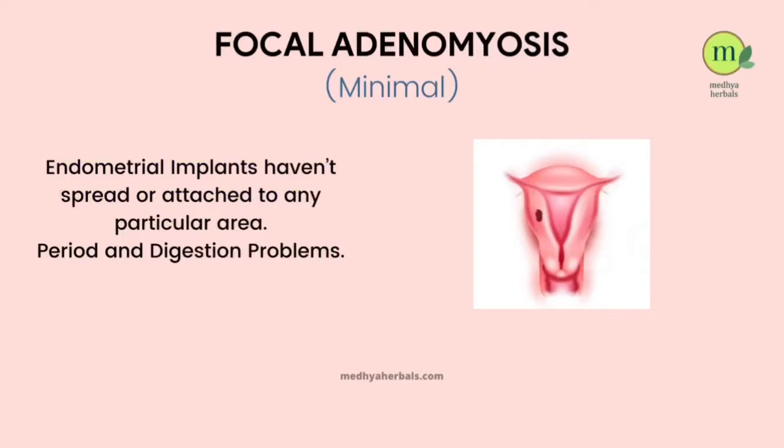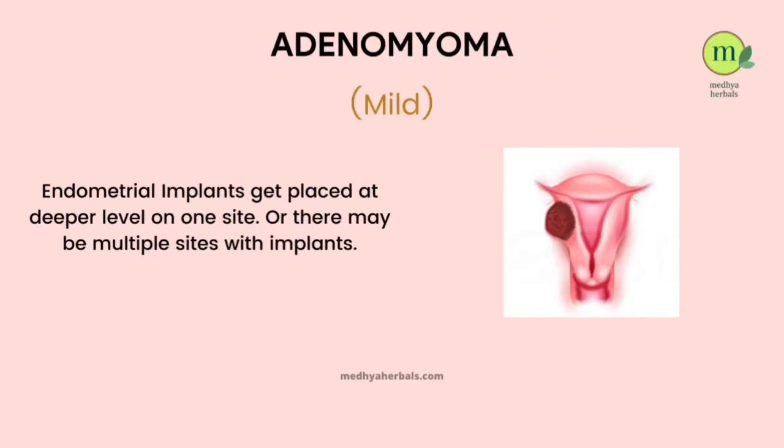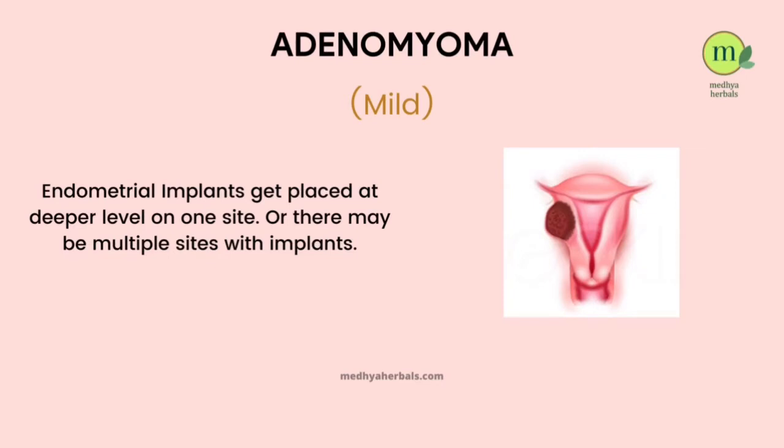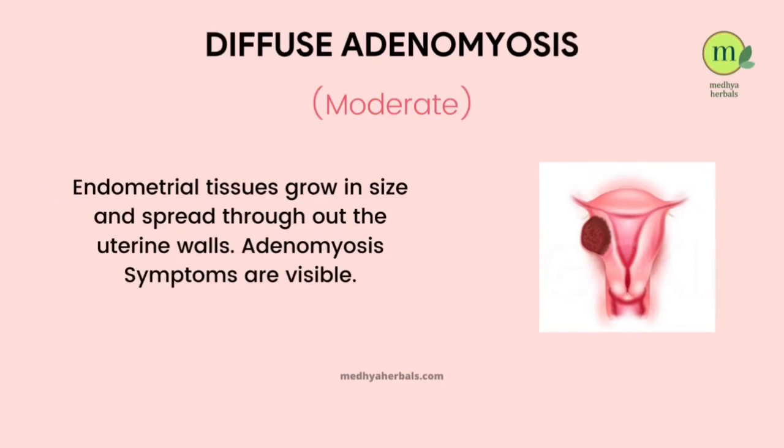Both adenomyosis and endometriosis are progressive disorders, meaning they start at a certain stage where you may experience no or mild symptoms. However, if the conditions are not treated in time, they lead to aggravated symptoms and spread of the endometrial tissue. Adenomyosis may begin with endometrial tissues growing in one small part of the uterus, but with advanced stage, the progression happens throughout the uterus, making it bulky and inflamed and creating pressure on the urinary and digestive system organs.